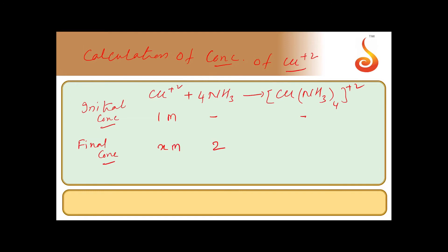To find the concentration of the copper complex formed, we observe the equilibrium constant. The value given is Kf = 1 × 10¹², which is a very large value. This implies the reaction goes almost to completion — whatever copper ion concentration you start with, essentially all of it forms the complex. So the concentration of the copper complex is 1 molar. We cannot take the remaining copper ion concentration as exactly 0 because equilibrium cannot exist at zero; instead, a negligibly small amount X molar remains.